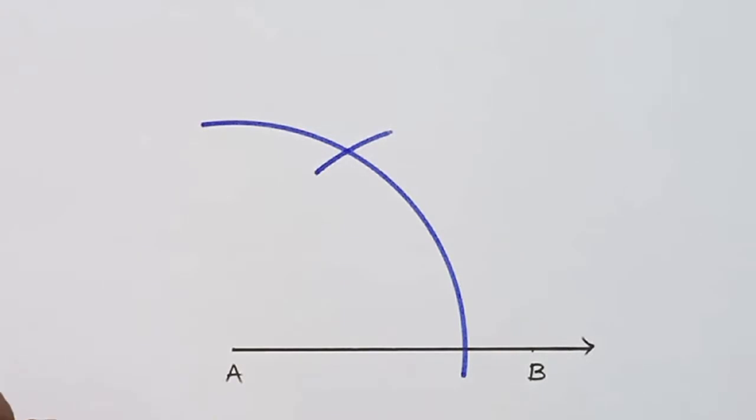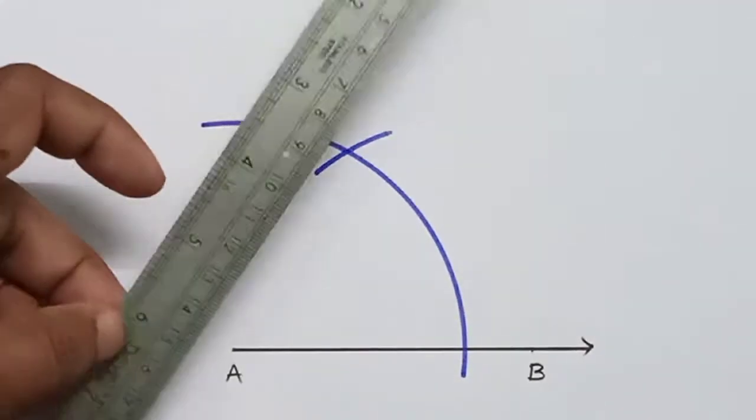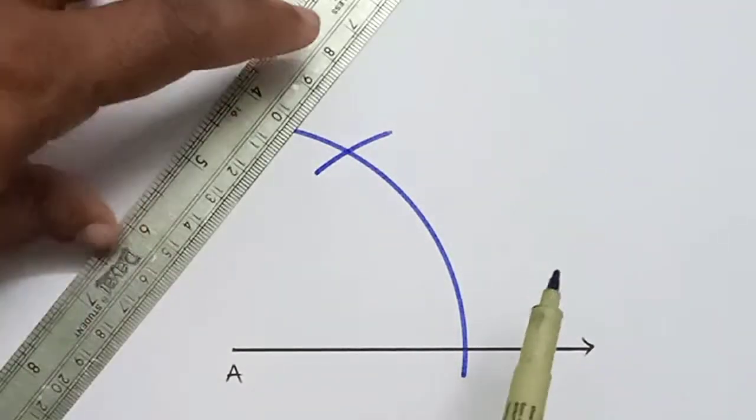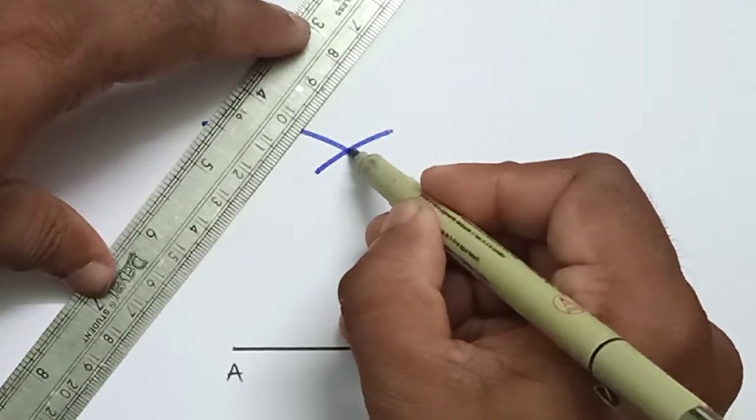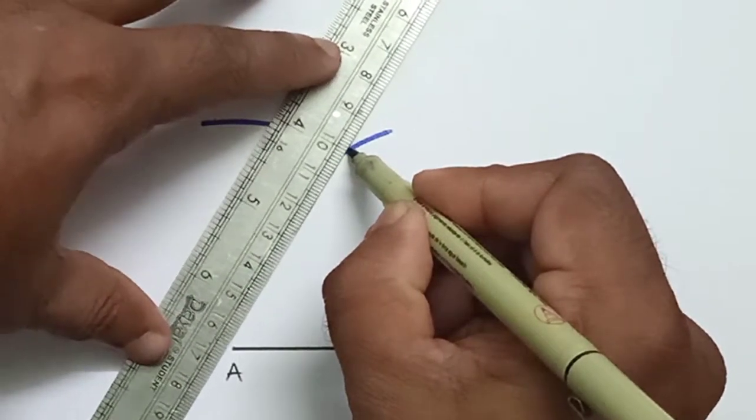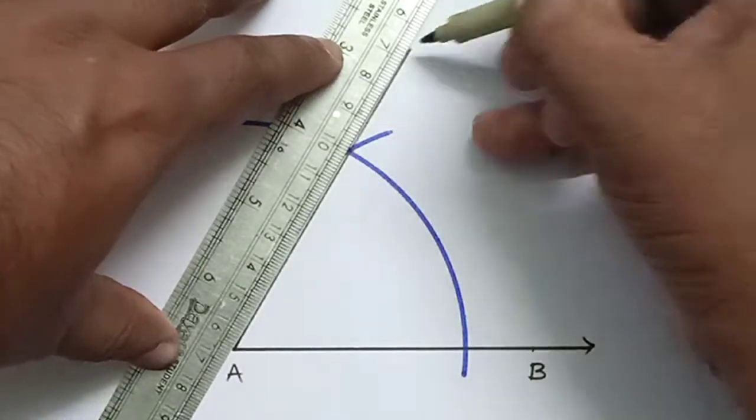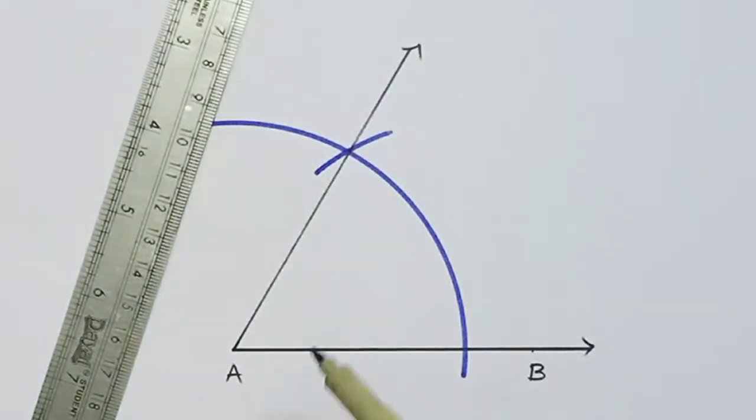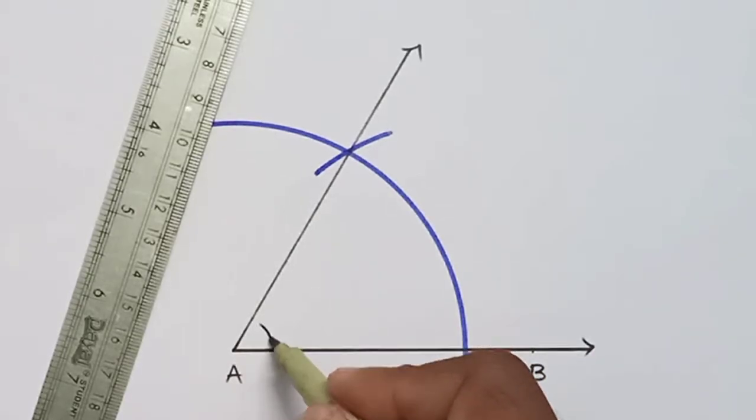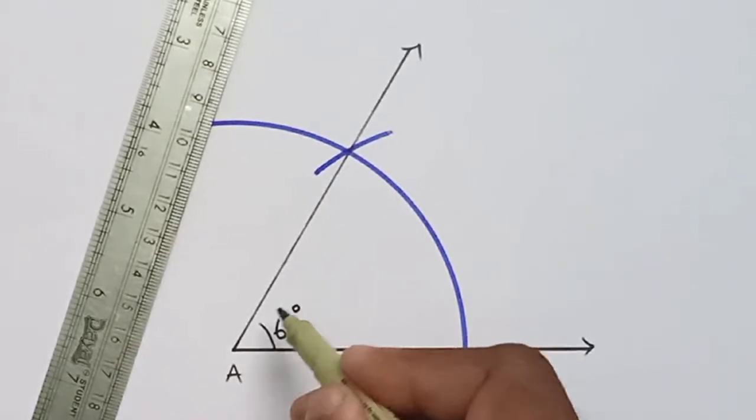Now join the end point A and the point of intersection. This is the point of intersection, join the end point A. So this angle will be 60 degree.